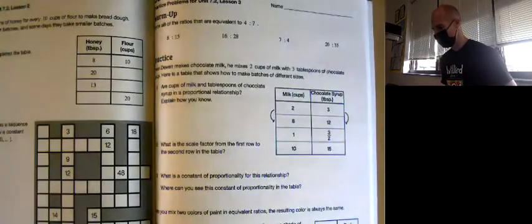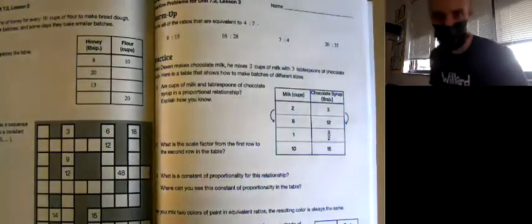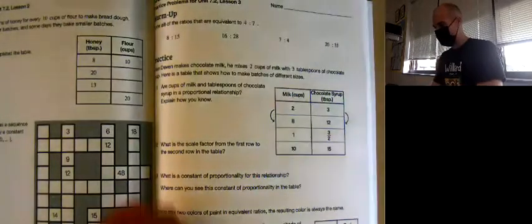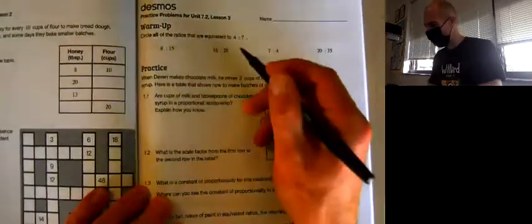Hey everybody, we are going to do the Unit 7.2 Lesson 3 practice in our Desmos workbooks. Let's start with the warm-up. It says circle all of the ratios that are equivalent to 4 colon 7.